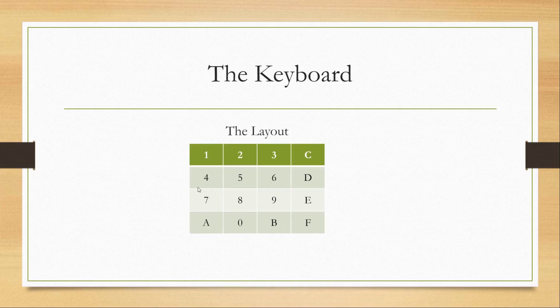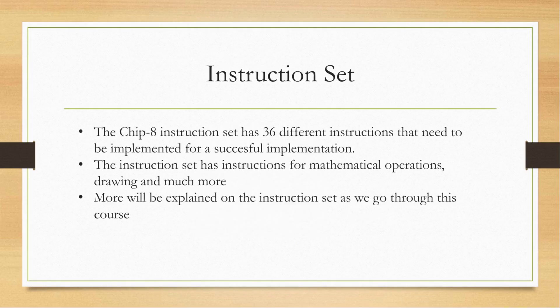This is the actual layout of the Chip 8 keyboard. Because we don't own the real hardware, we can't represent it physically, but essentially this is what it looks like. The instruction set of the Chip 8 has 36 different instructions that need to be implemented for a successful implementation. These instructions are responsible for mathematical operations, drawing, and bitwise operations such as AND, OR, and XOR. We'll explain more about the instruction set as we go through this course.